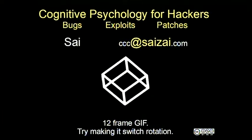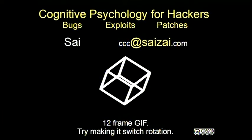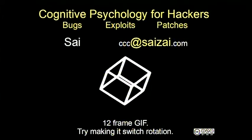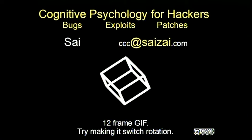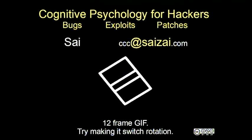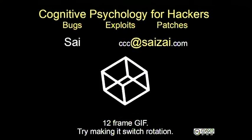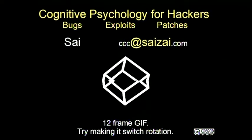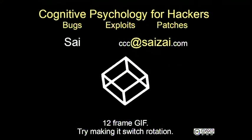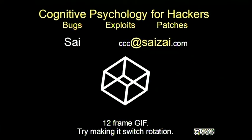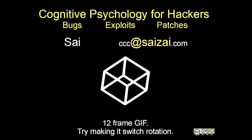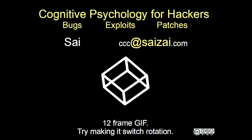Hi everyone. So this is something you may have seen on the internet — it's an interesting animation, one of a large number called bi-stable images. The trick in this particular case is if you look at any particular corner and pretend that's the top corner, you can switch which direction it's rotating. Try it.